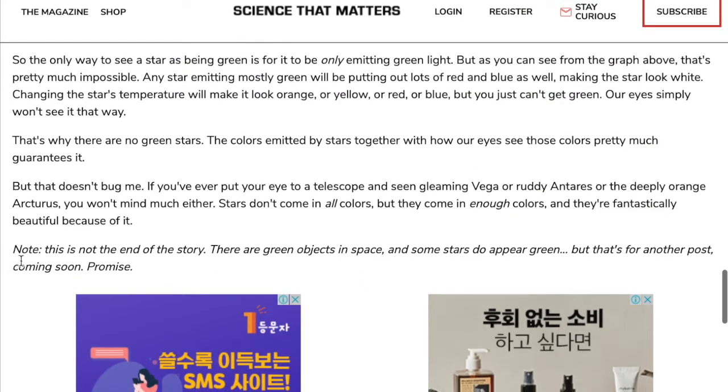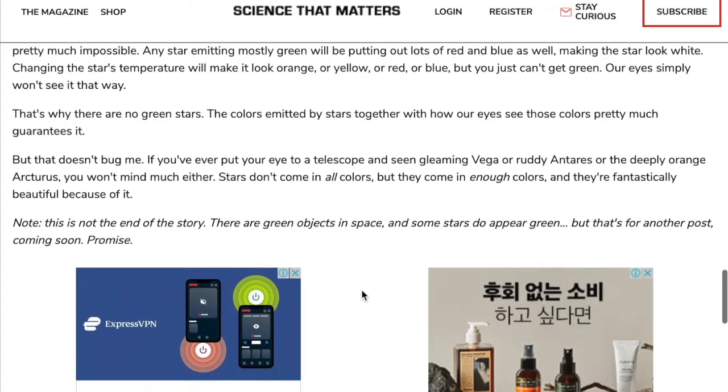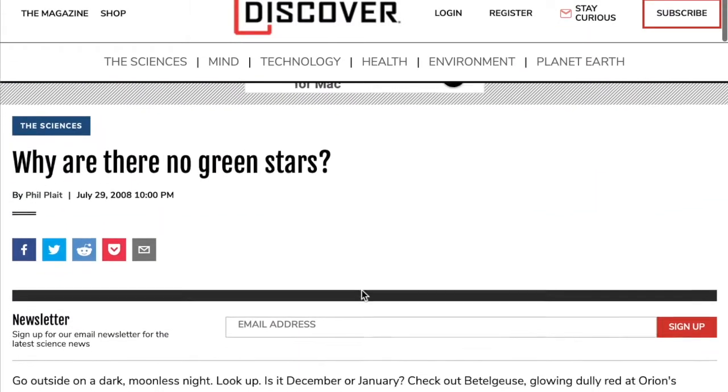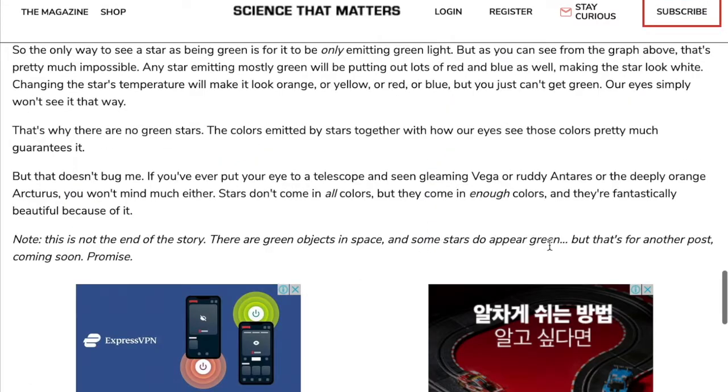But then they got a funny thing here. Note, this is not the end of the story. There are green objects in space and some stars do appear green. That's for another post coming soon. Promise. They just contradict themselves. Why are there no green stars? Note, some stars do appear green, but they're not green. What?